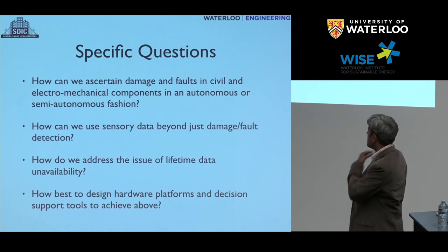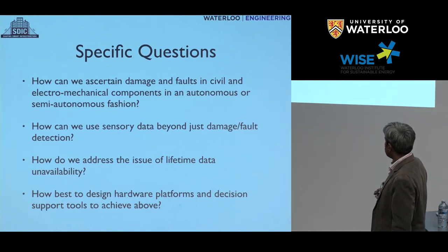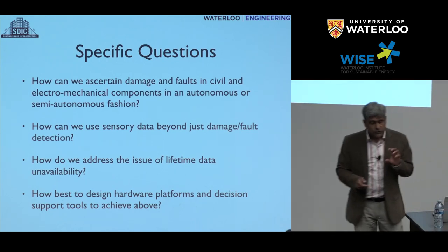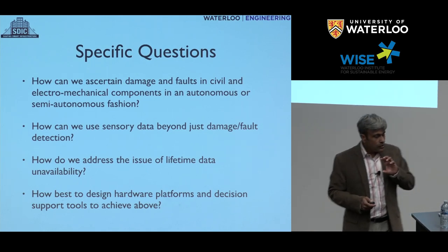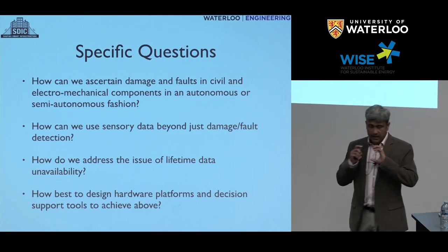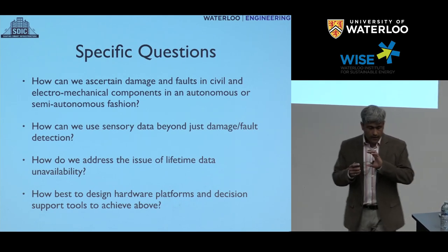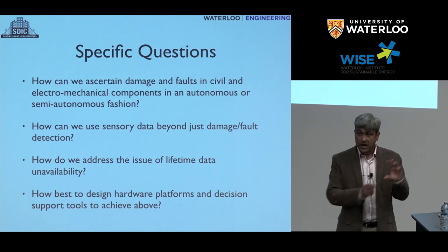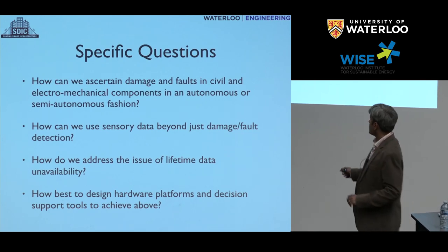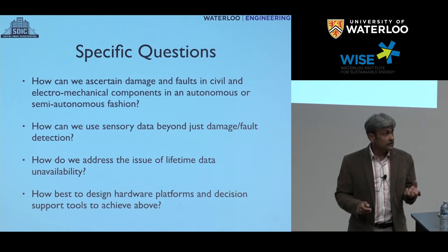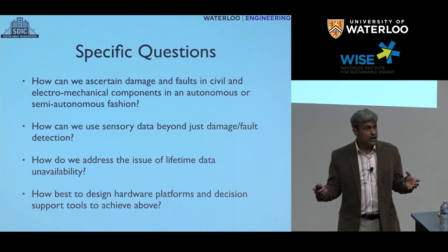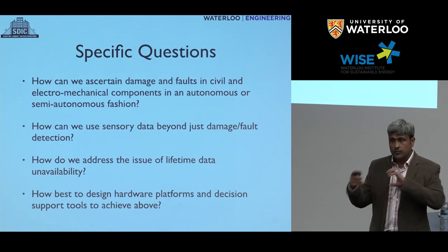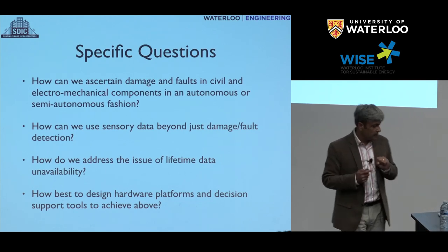How are you going to prognose failures when something is designed for such a long lifetime? This is a fundamental problem in infrastructure applications where you're dealing with traditionally very low-speed, highly reliable systems. You have to be clever in the way we structure our modeling. Last but not least, you cannot look at smart infrastructure as a single component. You have to look at all components — primarily the data acquisition platform — and design hardware platforms and decision support tools so each component works with the others in a seamless, autonomous fashion.